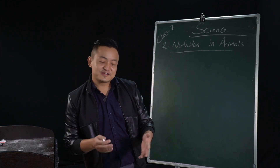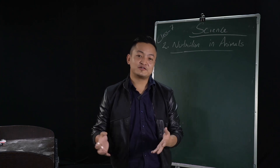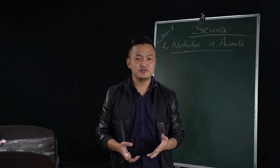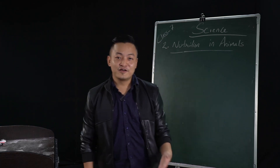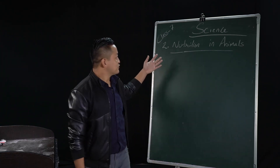So yesterday, let's recall back very quickly. Yesterday we studied nutrition in plants — how plants prepare their food. We learned about photosynthesis, that's how plants prepare their food in the presence of sunlight. So today we are going to start with a new chapter, that is nutrition in animals.